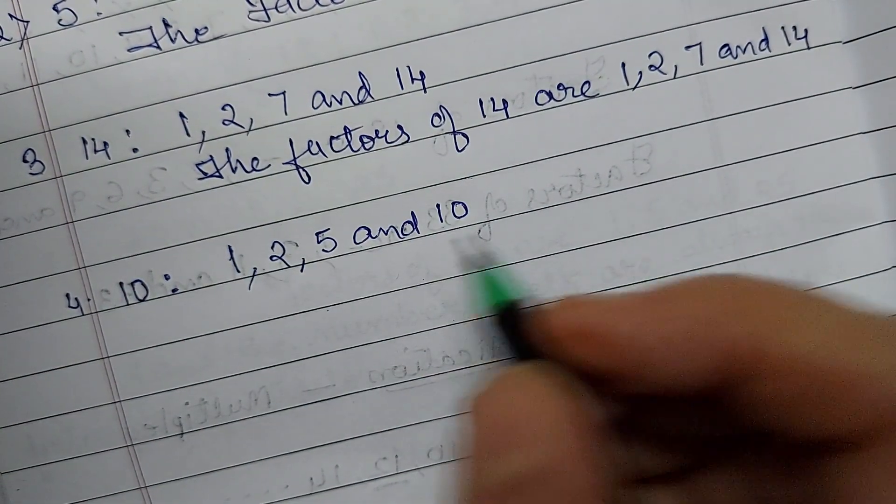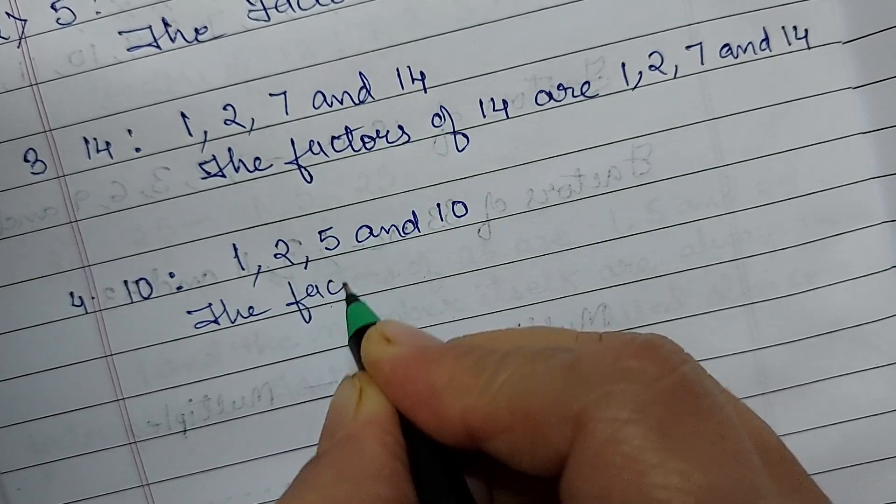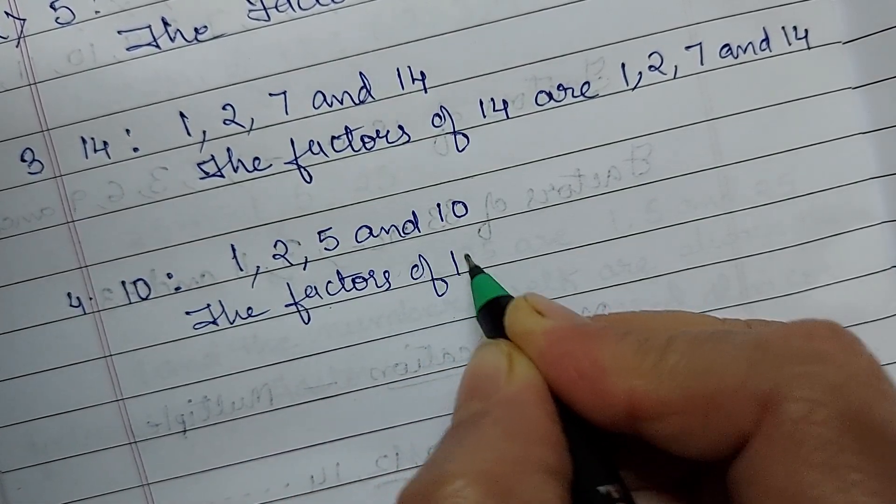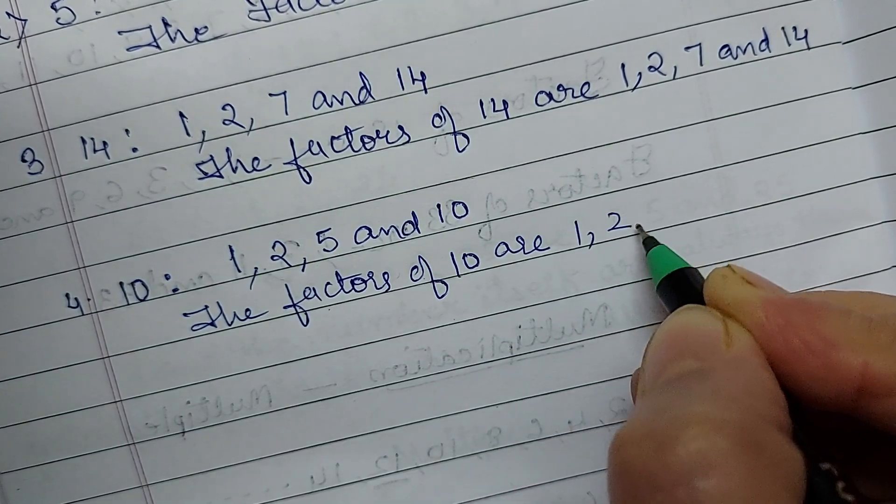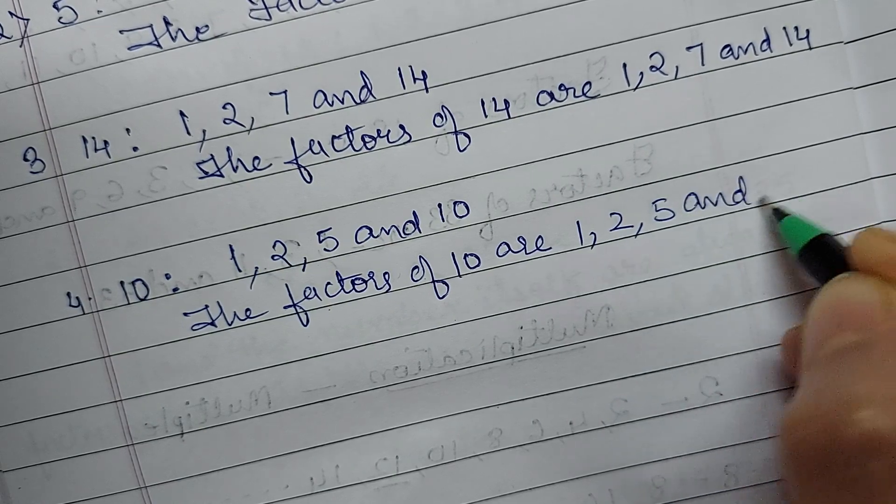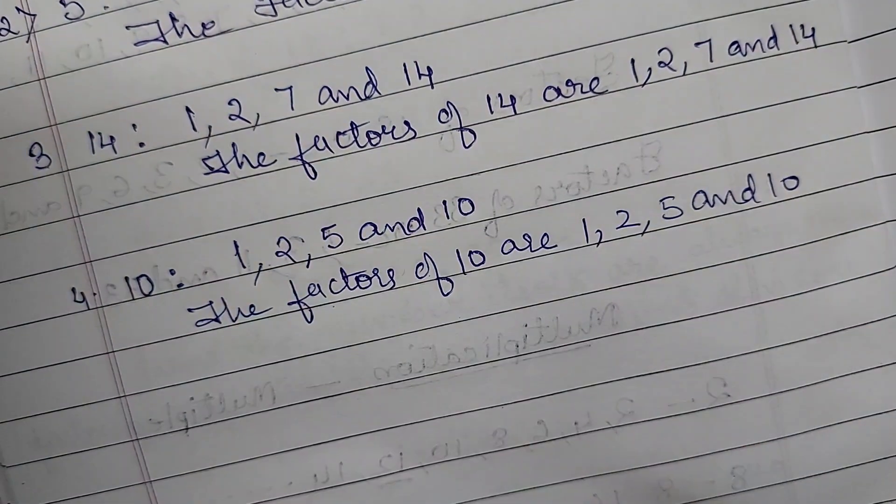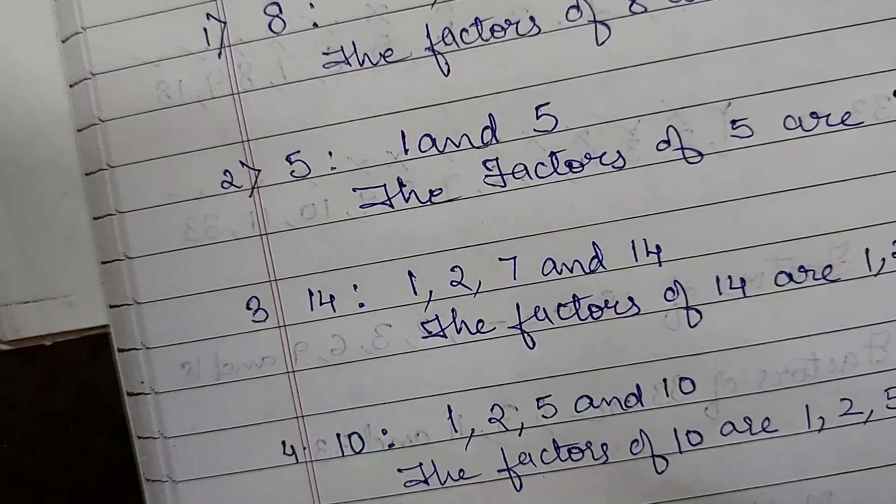Okay. Write the sentence form. The factors of 10 are 1, 2, 5 and 10. I hope you all have understood it. Now let the number be anything, any bigger number. You can do it.